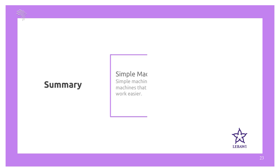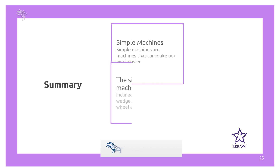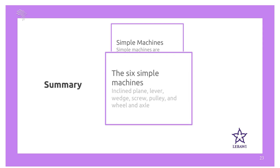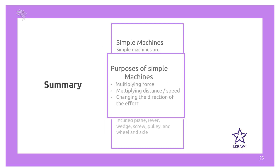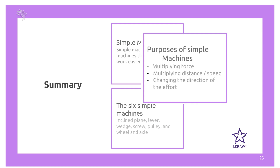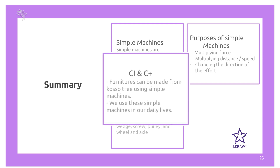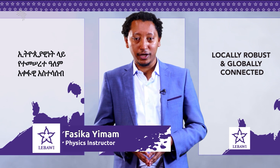Let's summarize what we have seen today. We defined simple machines as machines that can make our work easier. There are six simple machines: inclined plane, lever, wedge, screw, pulley, and wheel and axle. The purposes of simple machines are multiplying force, multiplying distance or speed, and changing the direction of the effort. As a course integration and curriculum plus, we saw that furniture can be made from Koso tree using simple machines, and we use these simple machines in our daily lives. I hope you enjoyed today's lesson. That's all for today. Thank you.